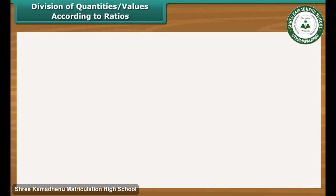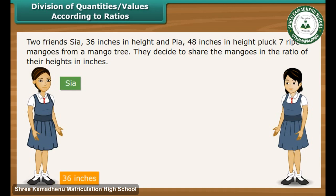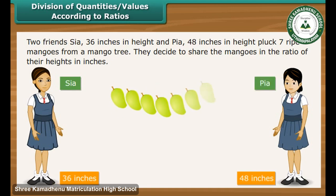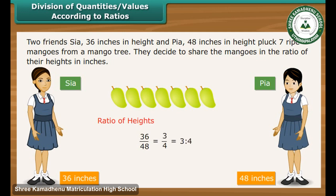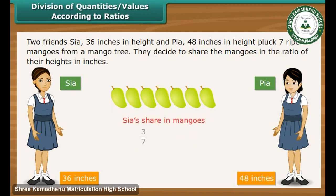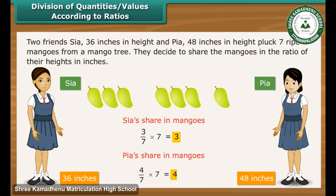We can use ratios to divide quantities and values. Two friends, Sia (36 inches tall) and Pia (48 inches tall), pluck 7 ripe mangoes and decide to share them in the ratio of their heights. The ratio of their heights is 3 is to 4. Out of every 7 mangoes, 3 will be eaten by Sia and 4 by Pia. Sia gets 3 out of 7 mangoes, and Pia gets 4 out of 7 mangoes.